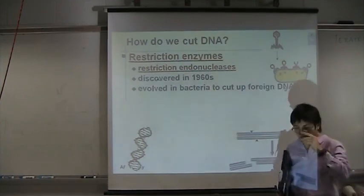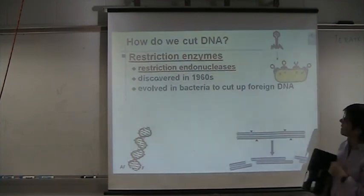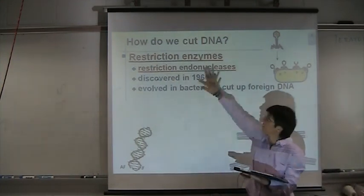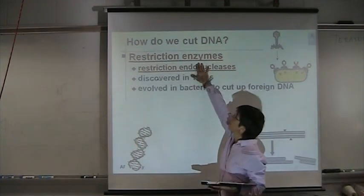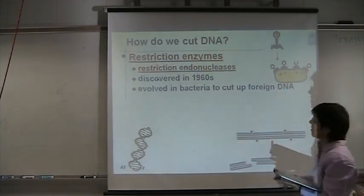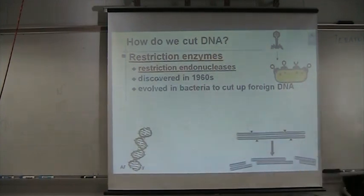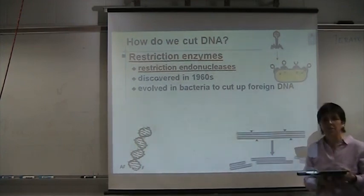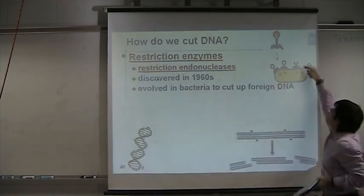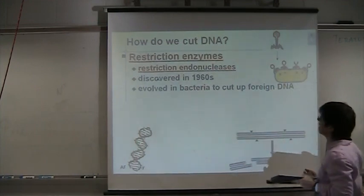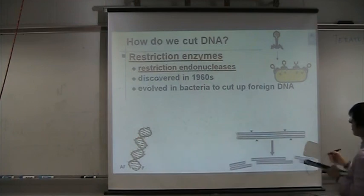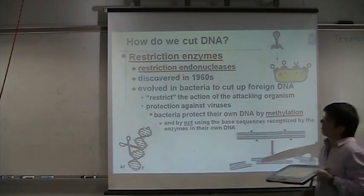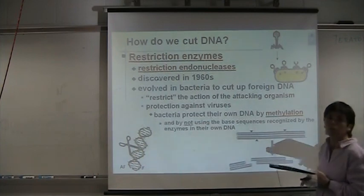How do we cut DNA? Restriction enzymes are also called restriction endonucleases — endo because they act inside, nucleases because they break nucleic acids. These enzymes were discovered in the 1960s and we get them out of bacteria. These enzymes are found in bacteria because this is how bacteria protect themselves from bacteriophages. When a bacteriophage injects its DNA into the bacteria, these enzymes floating in the cytoplasm go and cut the viral DNA — that's a failed attempt to infect the bacteria.